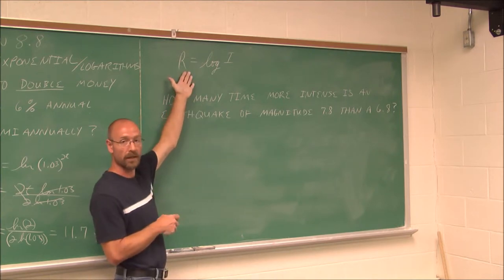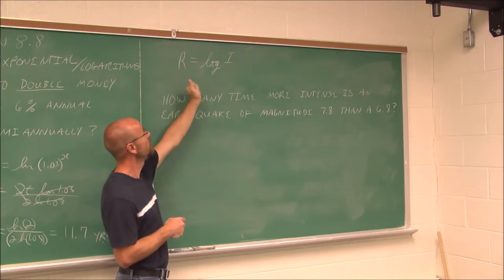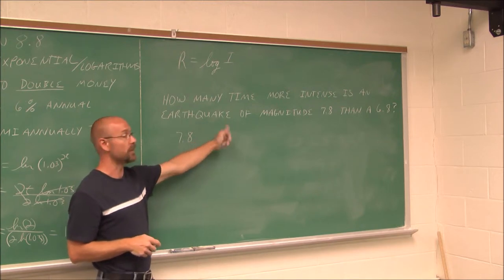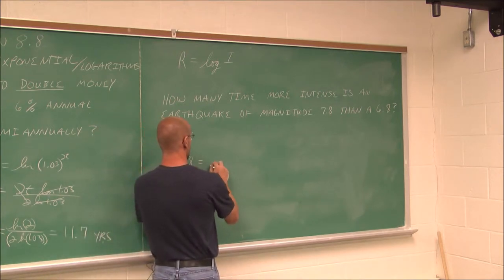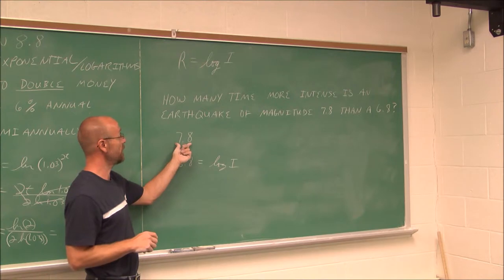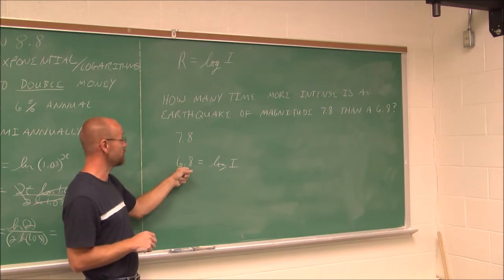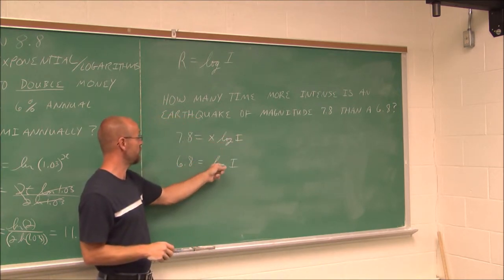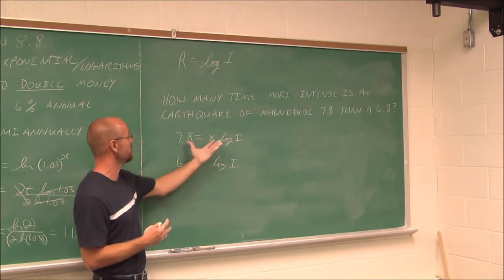So how many times more intense is an earthquake of magnitude 7.8 than a 6.8? Let's think about what this is saying and how it relates to the magnitude of an earthquake scale, r, the Richter scale. Magnitude equals log of i. 7.8 and 6.8 are the two different magnitudes that I'm given in this example. This value is the log of the intensity. We want to know how many times more intense is this than this.